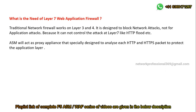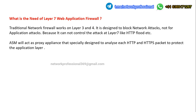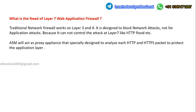A traditional firewall works on layer 3 or layer 4 only. It works on IP addresses — source and destination IP addresses — and port numbers. We write permit rules or deny rules based on a specific source or destination IP address using a particular destination port number. With this, we cannot protect against any HTTP or layer 7 attacks. That's the reason we go for the WAF, the web application firewall, or the layer 7 firewall.